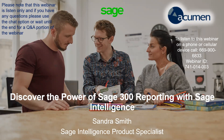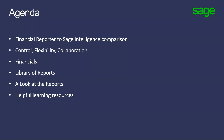Great, thank you very much. Hi everyone, I am Sandra Smith, the Sage Intelligence product specialist. I'll be talking about how you can discover the power of Sage 300 reporting with Sage Intelligence by controlling your data, improving your reporting, and using the flexibility of the Excel-based reports of Sage Intelligence. Now let me go over the agenda: first I'll talk about a comparison between Financial Reporter and Sage Intelligence, then the benefits and features of Sage Intelligence, how you can control your data with flexibility and collaboration.